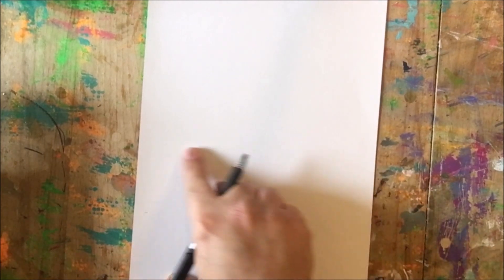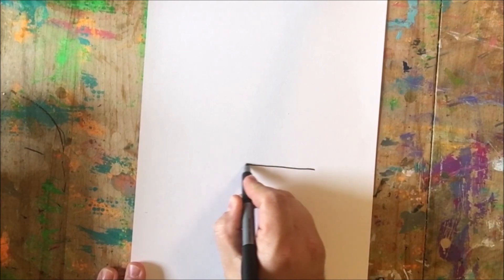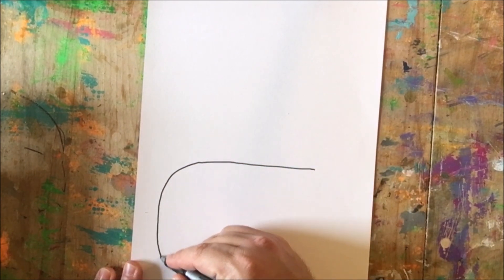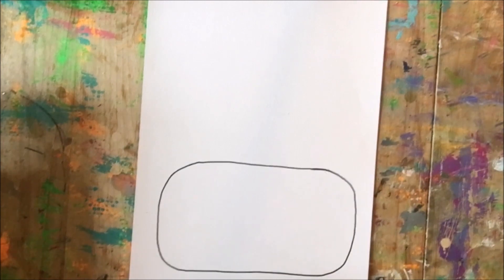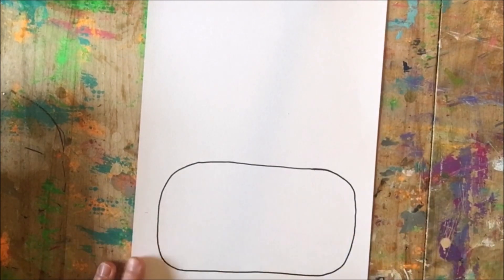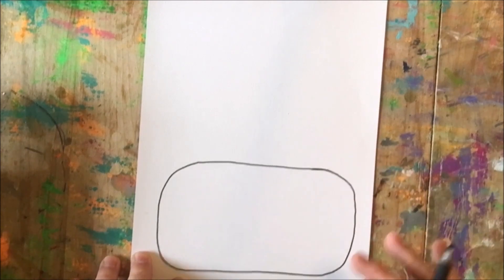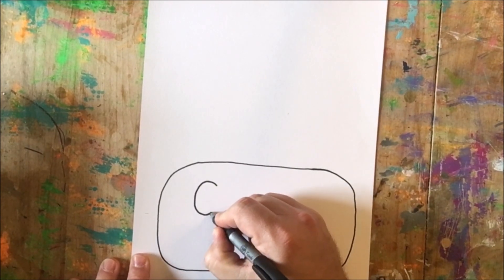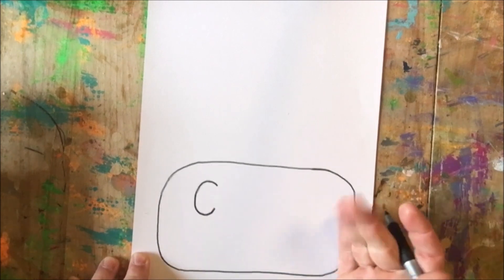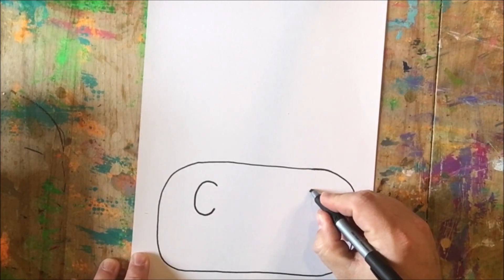Alright so to get started, you can start in pencil. I'm actually going to use a permanent marker so you can see. I'm going to work here on the bottom half of my paper, and I'm going to start by drawing a shape that's kind of a mixture between a rectangle and an oval. It's going to have some fairly straight lines, but the edges are going to be curved. This is going to be the nose or the muzzle of our cow. I'm just going to add some nostrils. I'm going to draw the letter C over on this side, and then I'm going to draw that reflection over on the opposite side, a backwards C here.